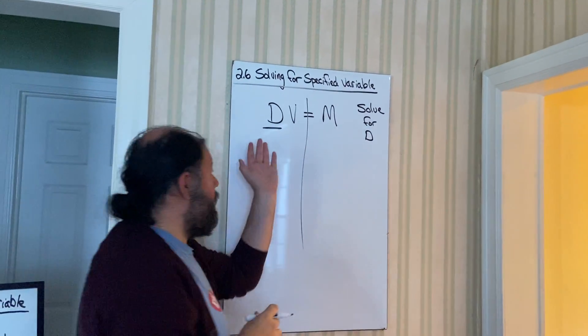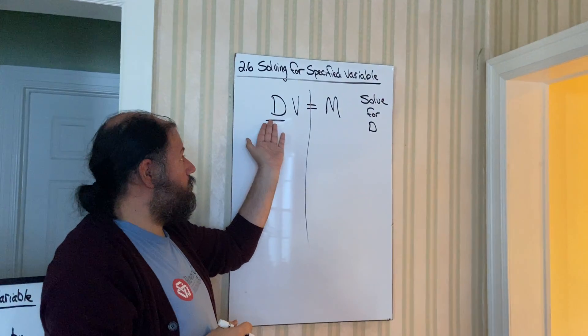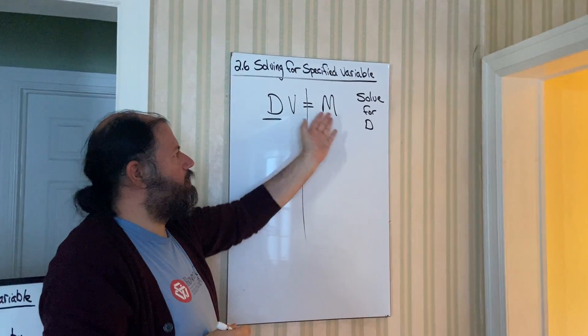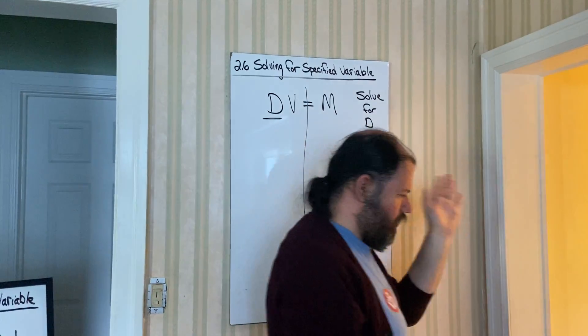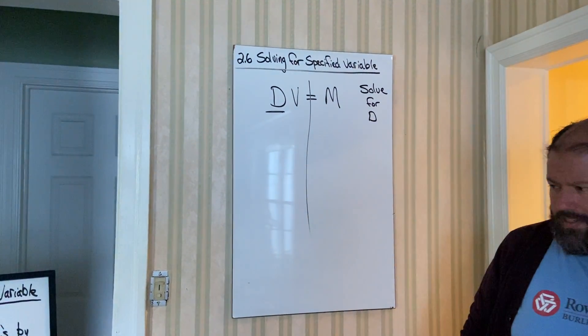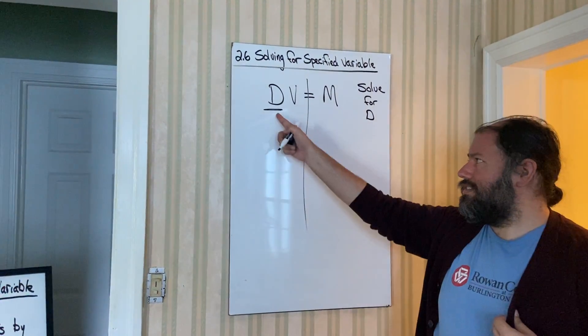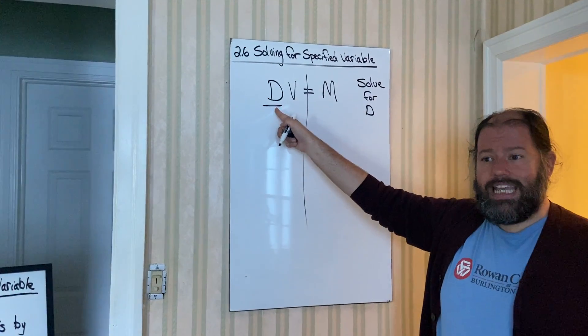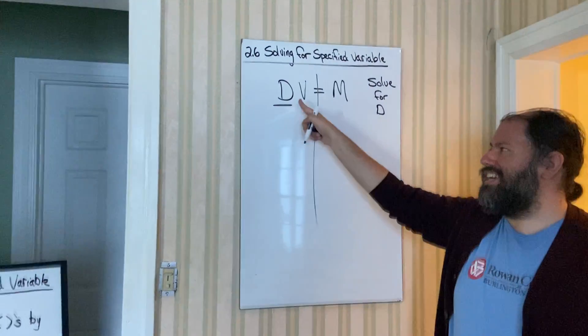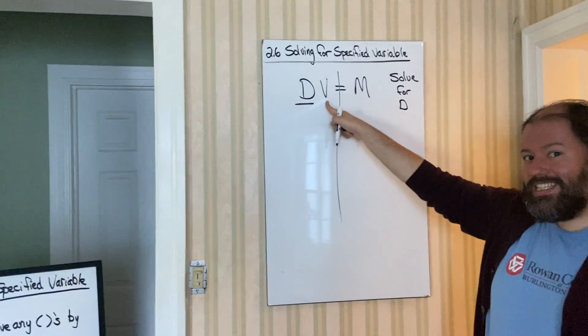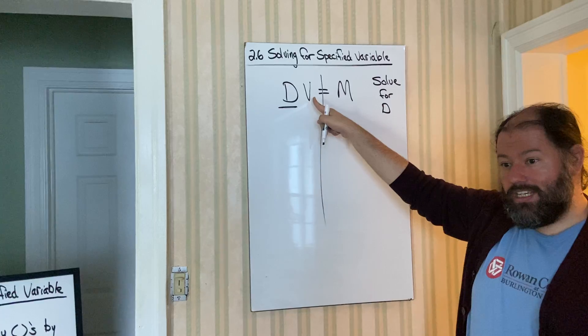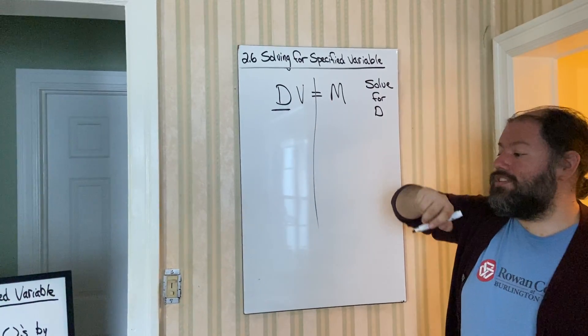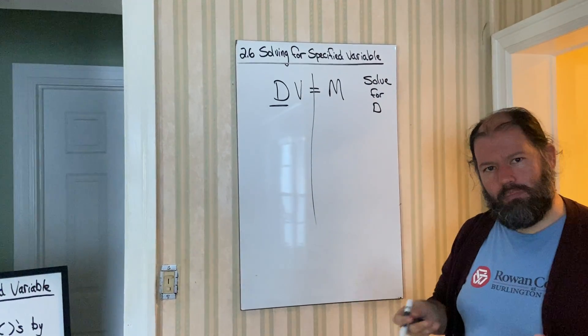So, that just means I need to get D by itself. Treat this as a variable. Treat everything else as constants or coefficients. Even though they're letters, just try to treat them as constants or coefficients. We ask ourselves, here's the underline. Is there anything added or subtracted with this D? No. This V is multiplied. Remember, if you don't see an operation, it's understood as multiplication. So, if I don't see an addition or subtraction sign, then I don't have to move.